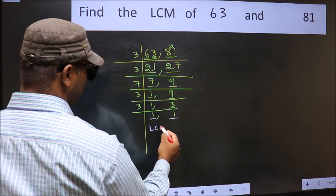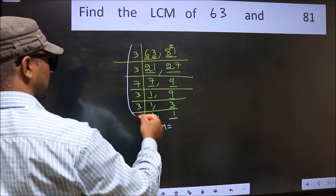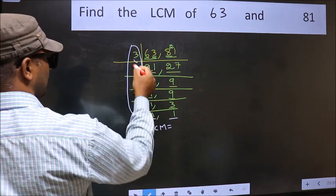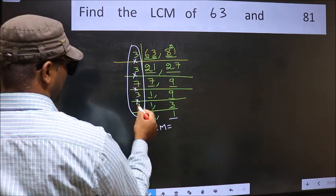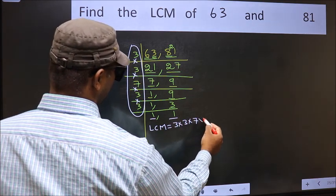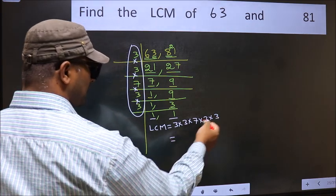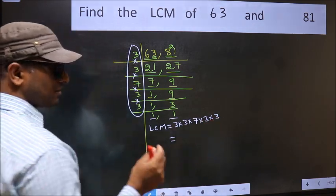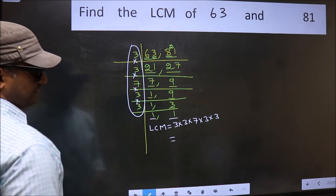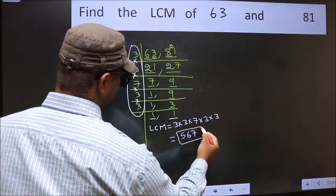So our LCM is the product of these numbers. That is 3 into 3 into 7 into 3 into 3 into 3. When we multiply these numbers we get 567 is our LCM.